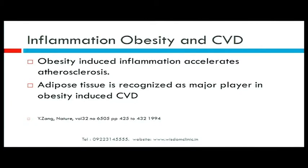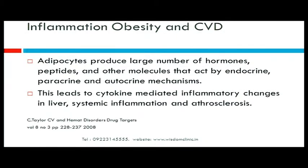What is the link between obesity and inflammation? Obesity-induced inflammation accelerates atherosclerosis, and adipose tissue is recognized as a major player in obesity-induced cardiovascular diseases. Adipocytes produce large numbers of hormones, peptides, and other molecules acting through endocrine, paracrine, and autocrine mechanisms. This leads to cytokine-mediated inflammatory changes in the liver, systemic inflammation, and atherosclerosis.